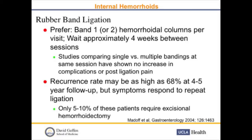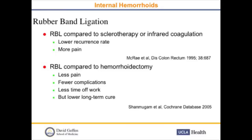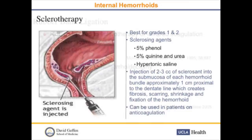I prefer to band one or two hemorrhoidal columns and wait approximately four weeks between sessions. The recurrence rate can be as high as 68% at four to five years follow-up, but symptoms do respond to repeat ligation. Rubber band ligation compared to sclerotherapy or infrared coagulation results in lower recurrence rate but more pain. Compared to hemorrhoidectomy, rubber band ligation results in less pain, fewer complications, and less time off work, but lower long-term cure.